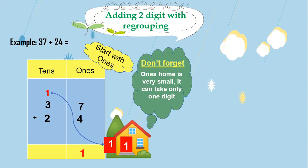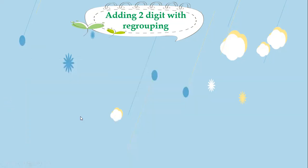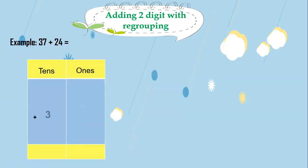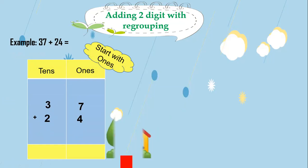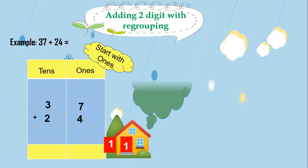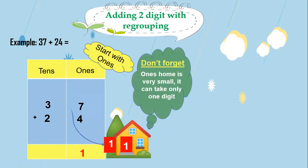37 plus 24: we will add 7 plus 4 — 7 in my mind and 4 on my fingers. After 7: 8, 9, 10, 11. I will not write all of 11. I will write 1 in ones and carry a 1. Don't forget to write the carry. Now I will add 1 plus 3 plus 2: 1 plus 3 equals 4, then 4 plus 2 — 4 in my mind and 2 on my fingers. After 4: 5, 6. So I will write 6 in tens. Remember: the ones place is very small — we write only one digit and the other digit will be the carry.